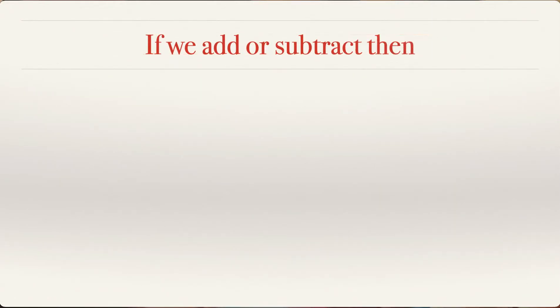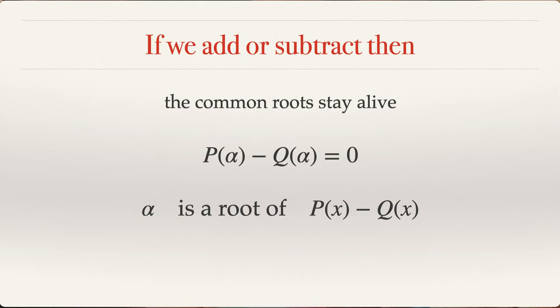So if you add or subtract, as I said, the common roots will stay alive. So let's subtract. Since P of alpha and Q of alpha were both individually equal to zero, P of alpha minus Q of alpha is surely equal to zero, which means alpha is a root of this expression P(x) minus Q(x). This is a new expression that you created from P(x) and Q(x).